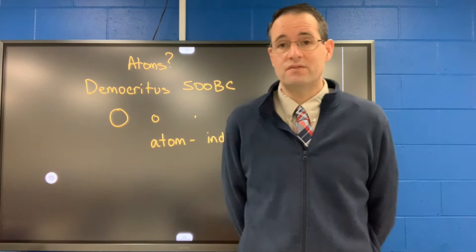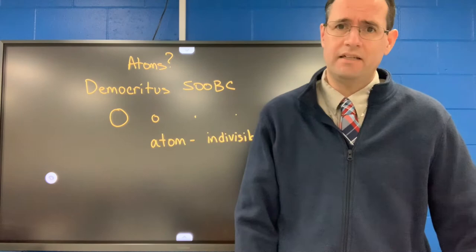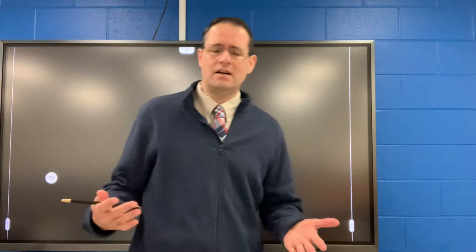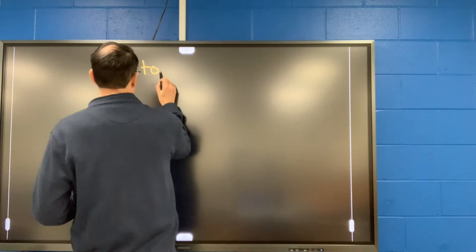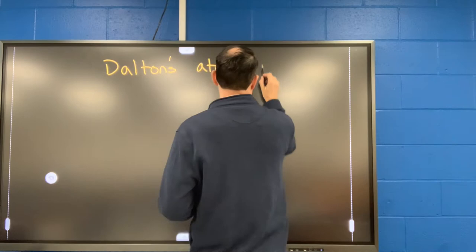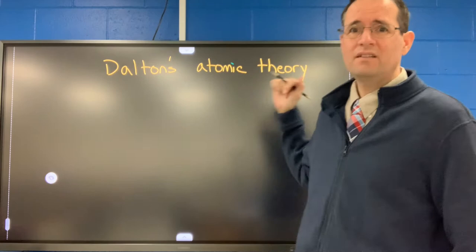Later, John Dalton, an English chemist and scientist, formulated the precepts of chemistry regarding the atom. He came up with the atomic theory — and this is a theory. We've talked about laws, theories, and hypotheses. There are many, many experiments to suggest that what we're going to write here on the board is true.